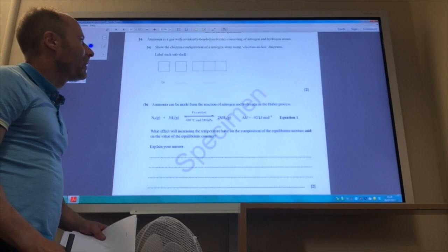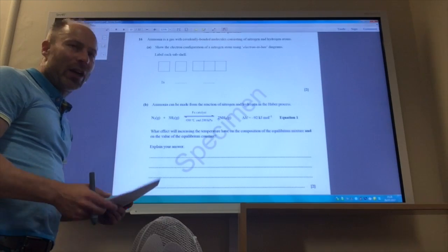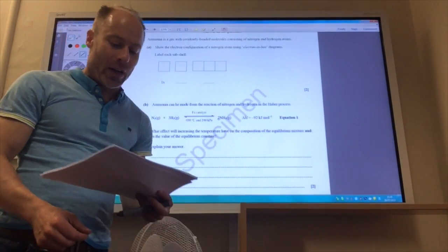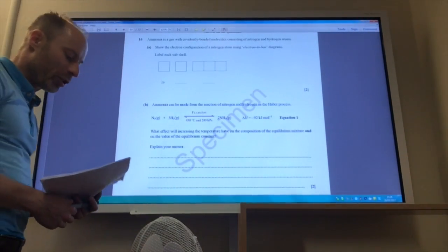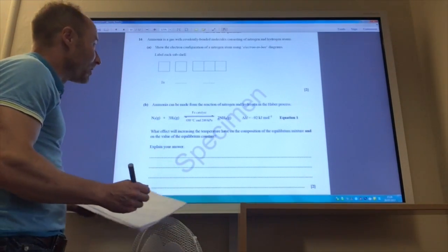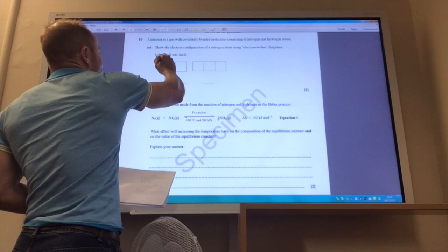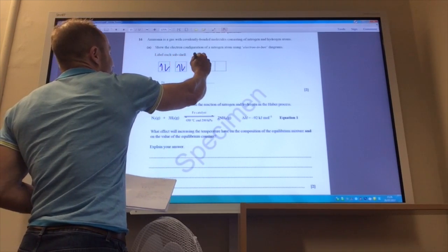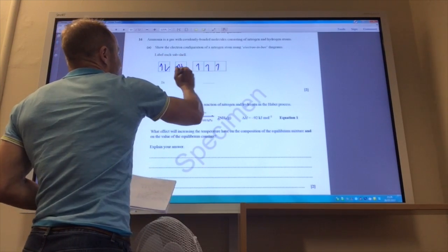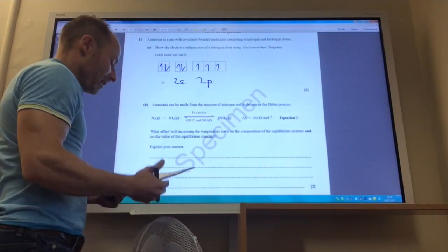Show the electronic configuration of a nitrogen atom using electrons in boxes. Well, if you look at the periodic table, nitrogen has of course got one, two, three, four, five, six, seven protons, so seven electrons. So here we go, one, two, three, four, five, six, seven. This is of course the 2S, and this will be the 2P subshell.